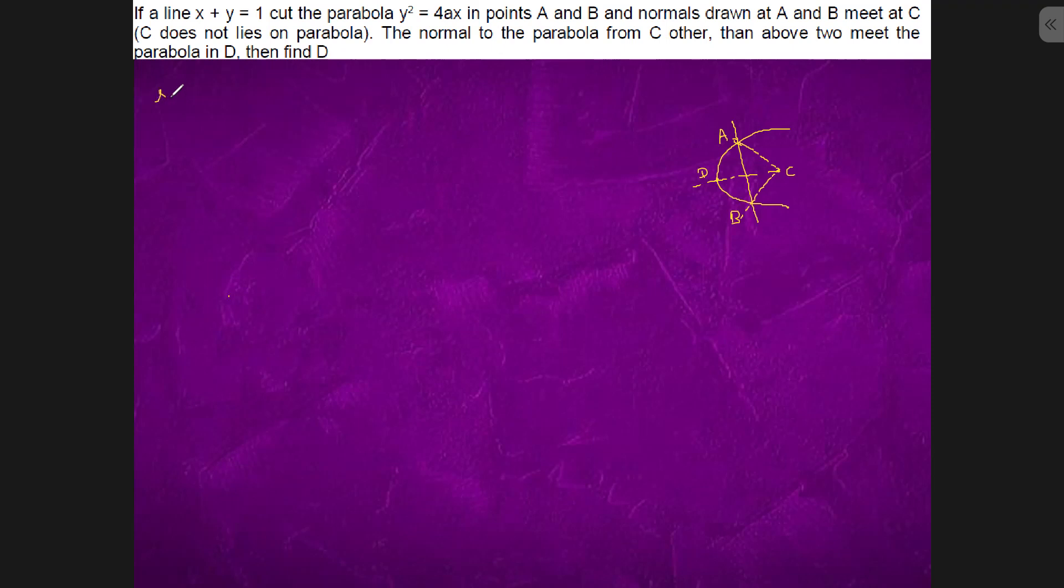So we will have first step, slope of normal. Let's take A is x1 comma y1, the point A is (x1, y1). The slope of normal will be minus 1 of slope of tangent. So slope of tangent is what? 2a by y1, which is what? Minus y1 by 2a, okay. This is one thing.